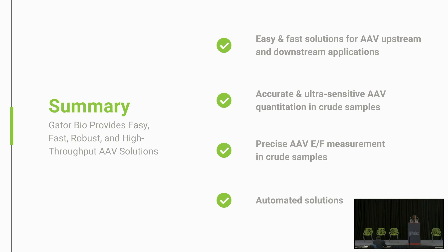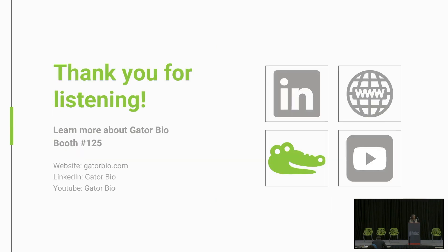To summarize — because I only have 15 minutes — GatorBio is providing a very easy and fast solution for early determination of AAV titer and empty versus full ratio in a very user-friendly setup. If you want to know more, please feel free to stop by our booth at number 125. You will be able to see the instrument; we have both models there, along with all the biosensors and applications. Please feel free to stop by. Thank you for listening.